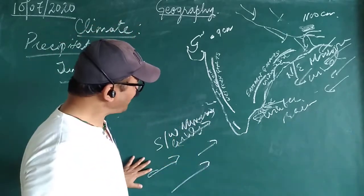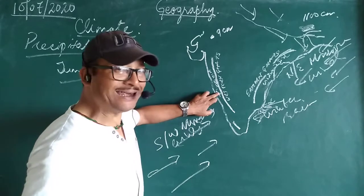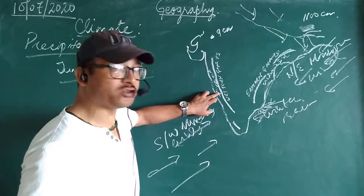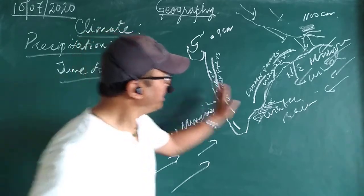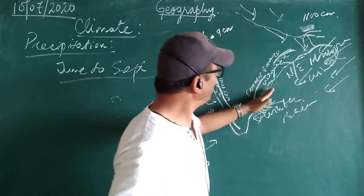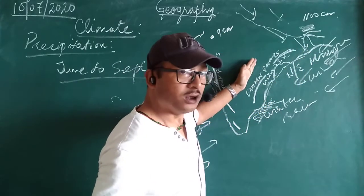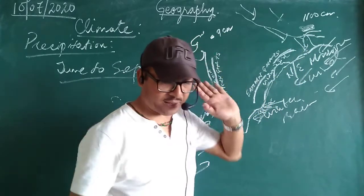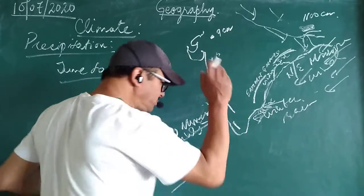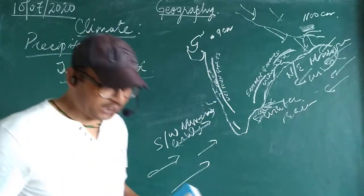The Southwest Monsoon — maximum moisture — hits the windward side. This is the Northeast Monsoon area — this is windward side. The rain shadow area or leeward side receives very little rainfall. Now let me come to the next point — that is factors affecting the climate of India.